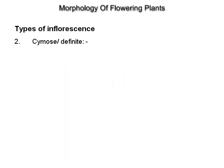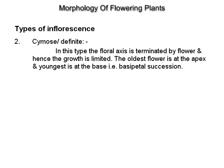Cymose or definite inflorescence: in this type, the floral axis is terminated by a flower and hence growth is limited. The oldest flower is at the apex and the youngest is at the base — that is, basipetal succession, example jasmine and hibiscus.